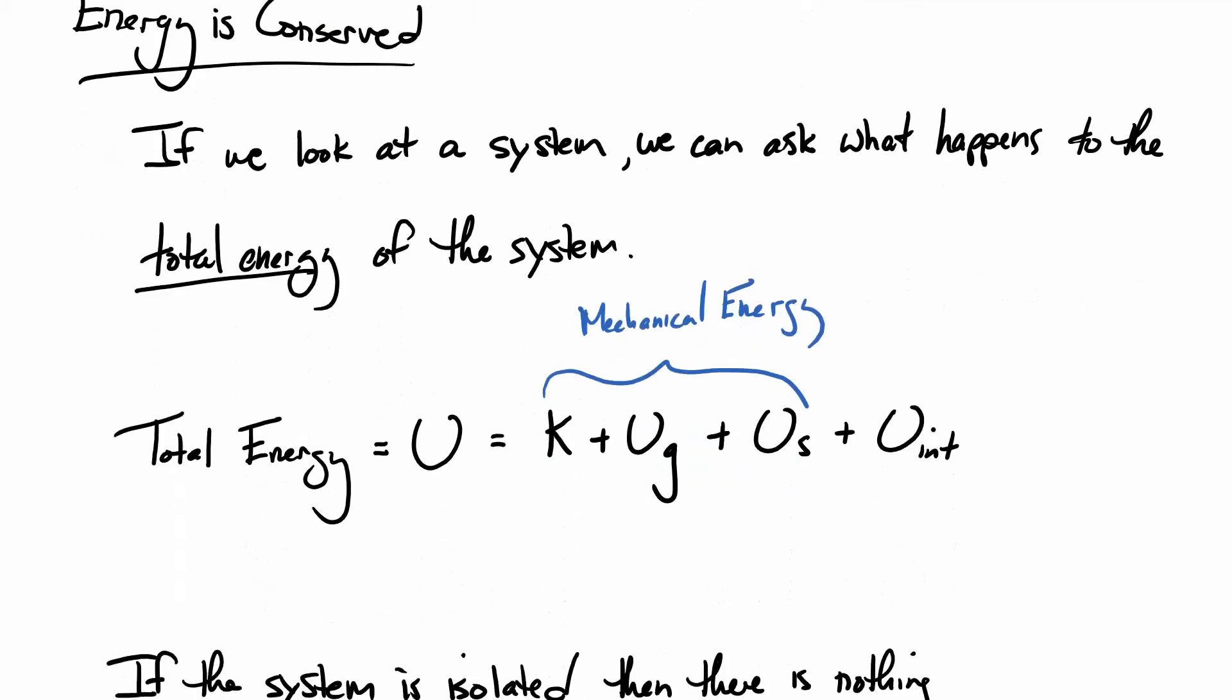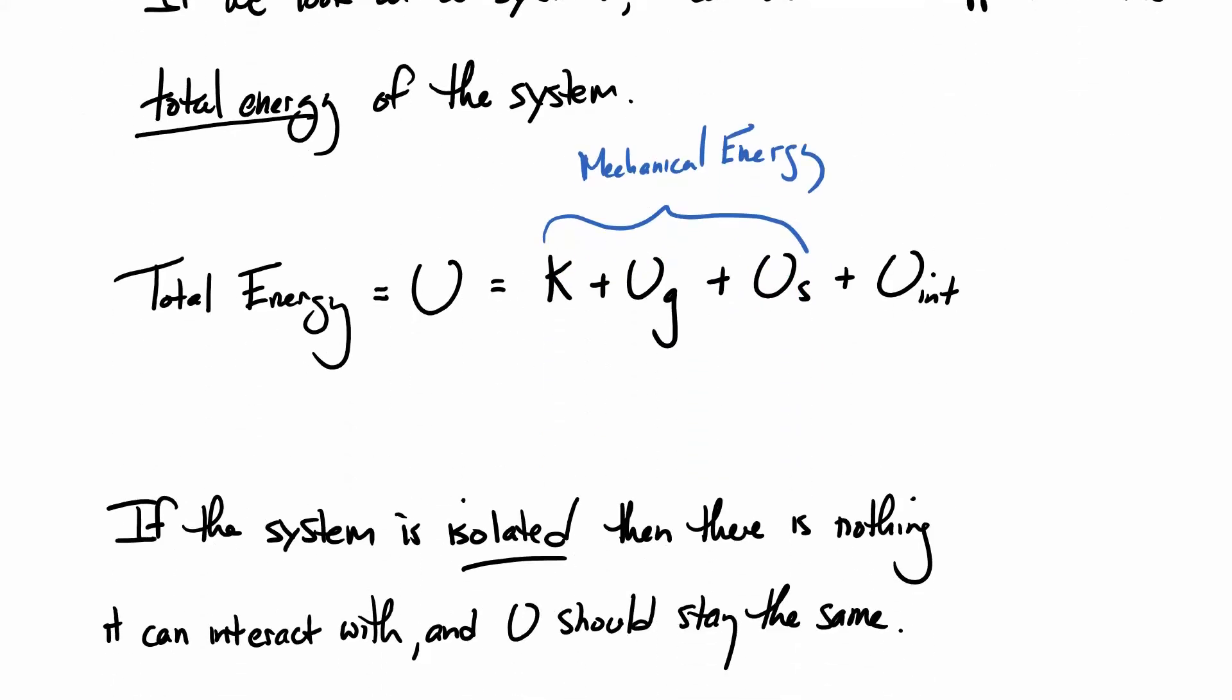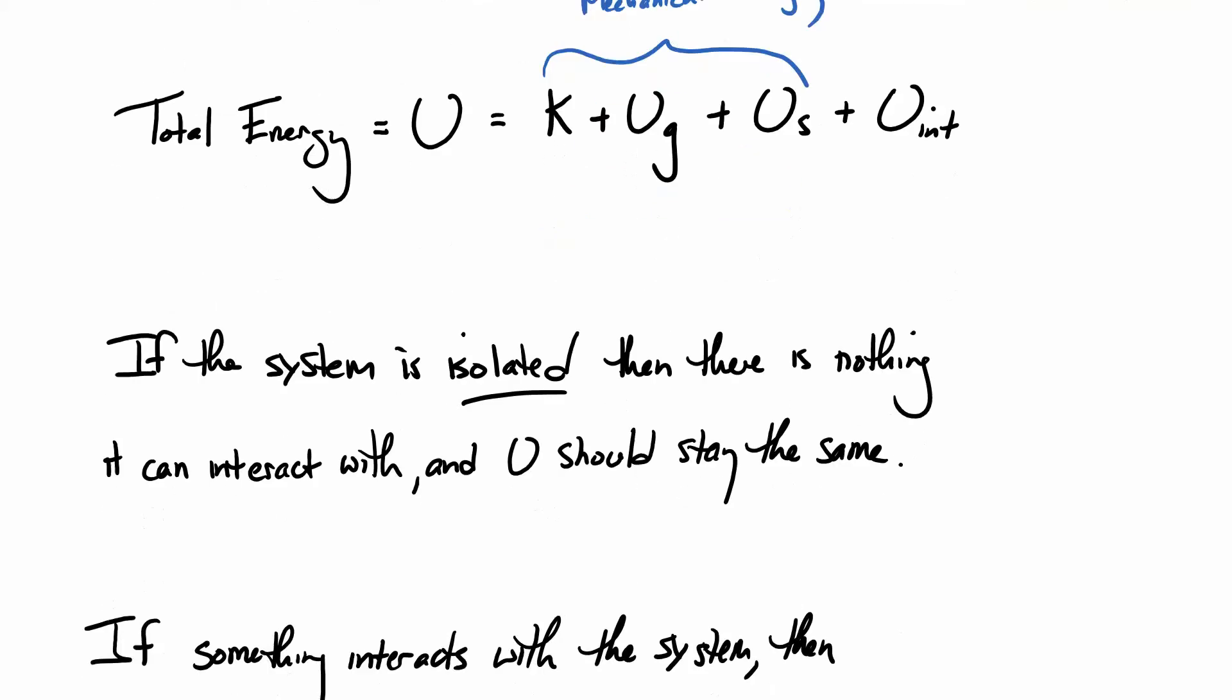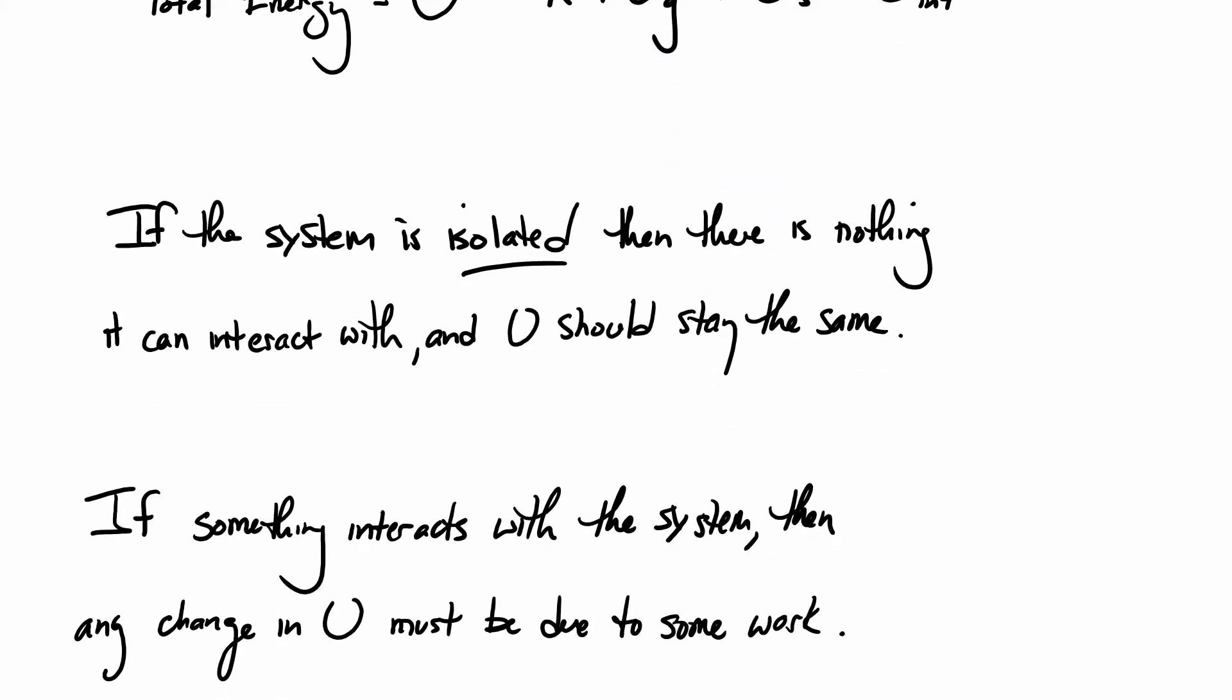So now I'm going to claim if the system is isolated, so if there's nothing around the system, then there's nothing it can interact with. And if it can't interact with anything, nothing can do work on it. Nothing can do work on it. Nothing can change its energy. So if it's isolated, then the potential, the total energy rather, U should stay the same. Now if something interacts with the system, though, if it's not isolated, then any change in the energy, the total energy U, must be due to some work. So this is how we can kind of wrap this up. We're going to say that the total energy changes by an amount known as the work.